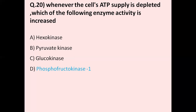Question 20: Whenever the cell's ATP supply is depleted, which of the following enzyme activities increases? Option A hexokinase, option B pyruvate kinase, option C glucokinase, option D phosphofructokinase. Phosphofructokinase is a regulatory enzyme and a major control point in glycolysis. Hexokinase is the first enzyme involved in glycolysis. Pyruvate kinase catalyses conversion by phosphorylation. The correct answer is D, phosphofructokinase.